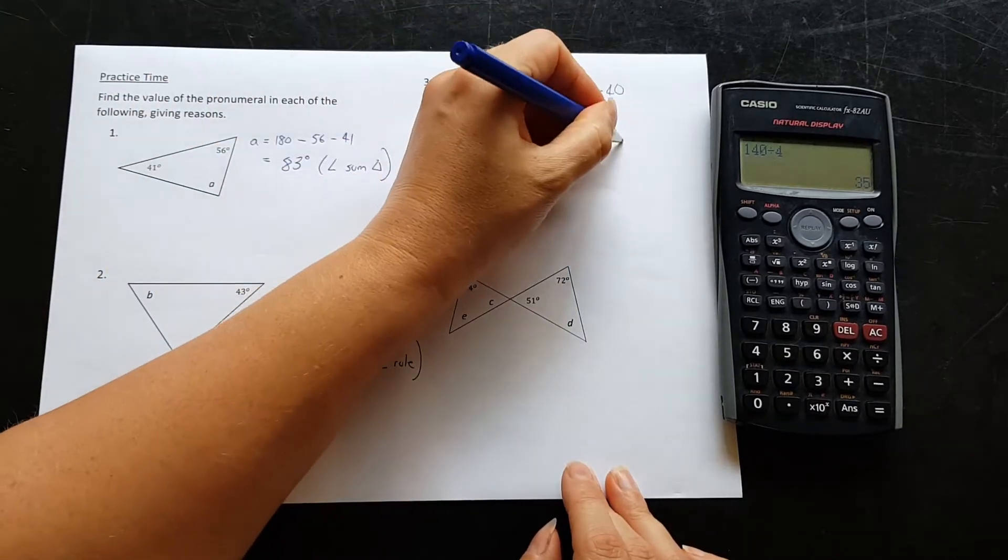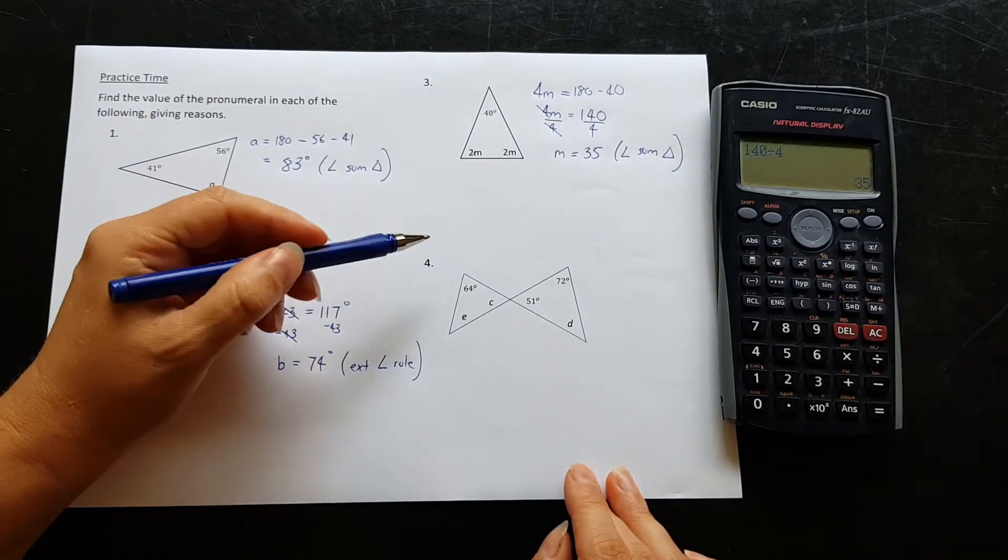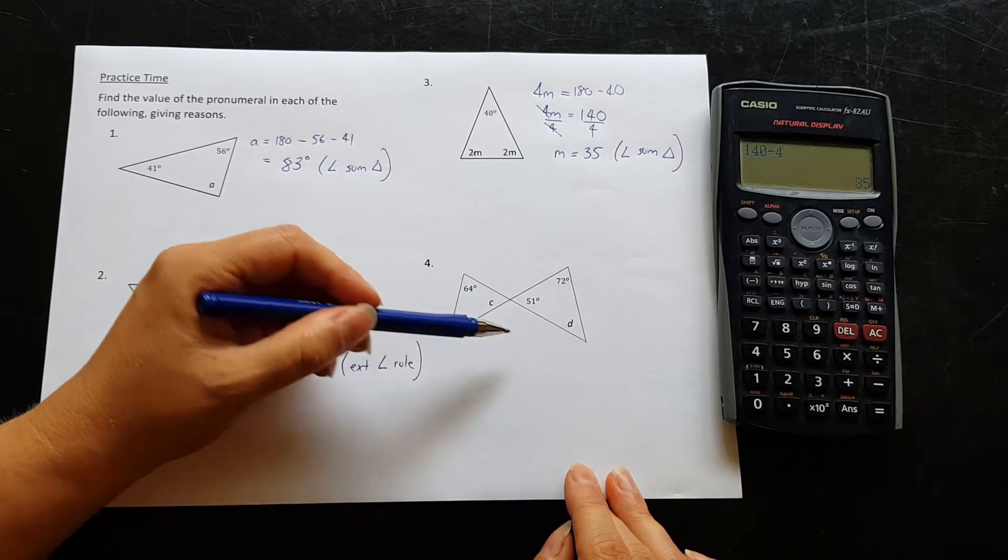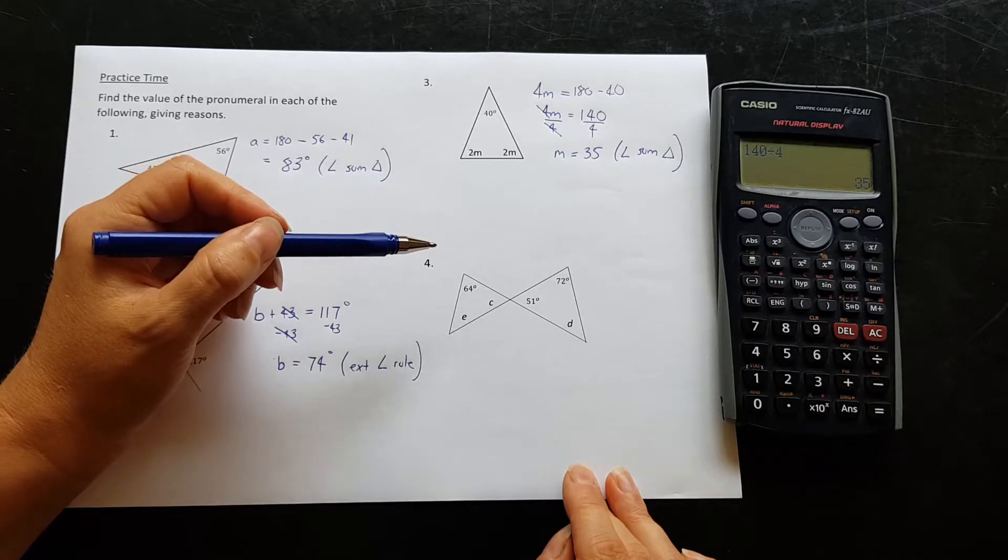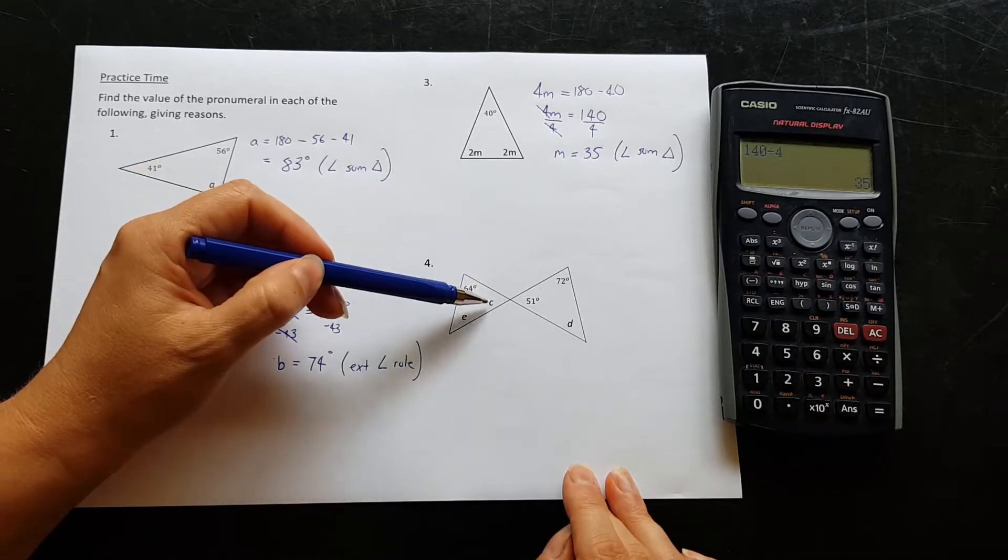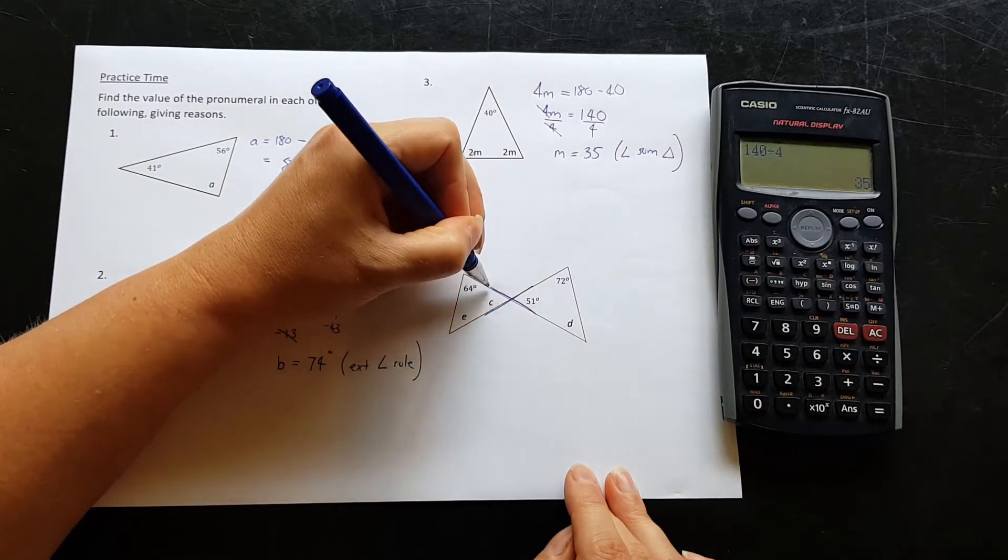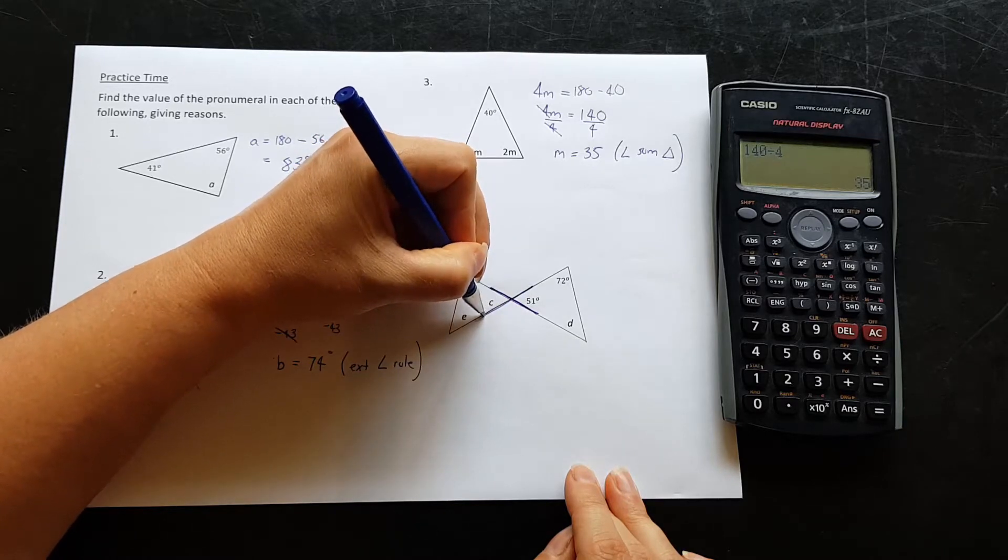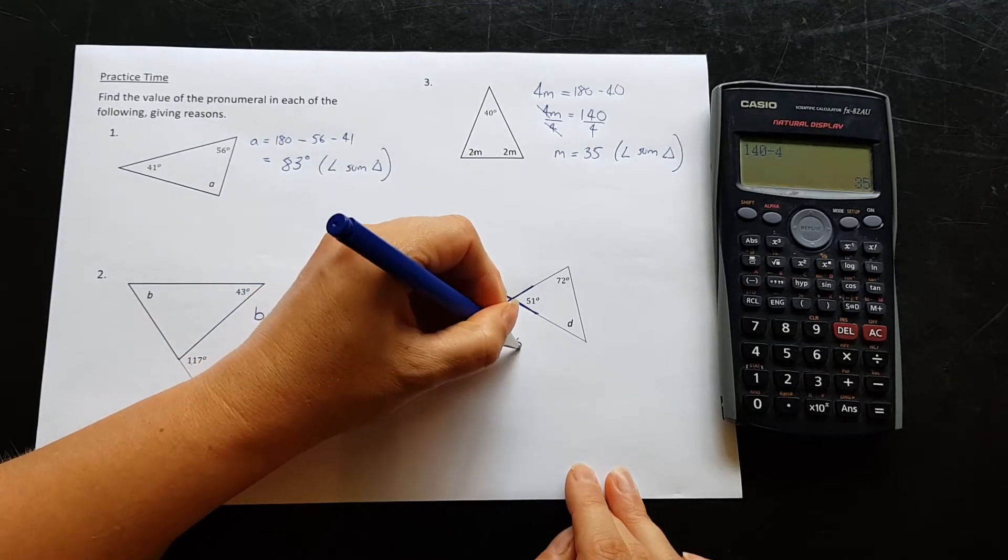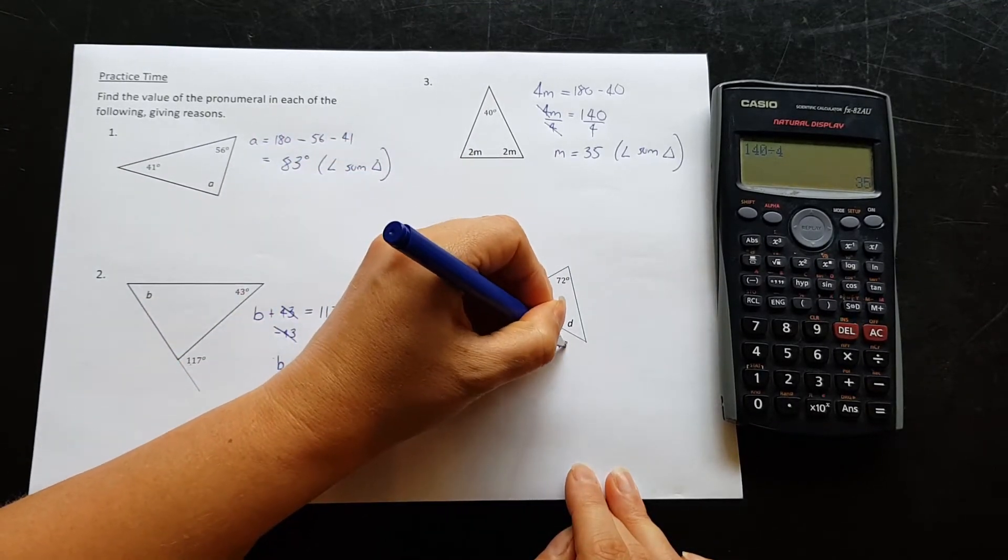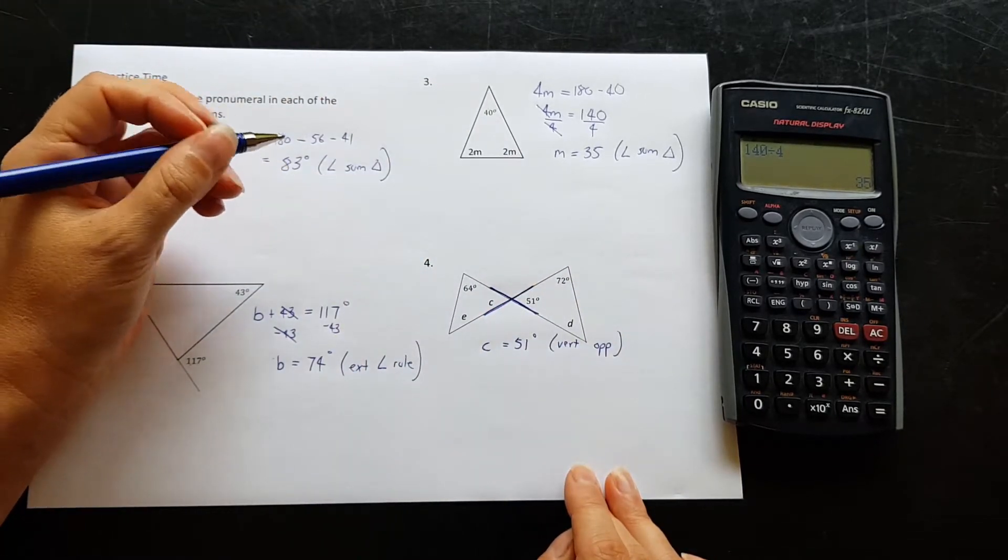And we've finally made it to the last question. Three letters here to find, and there is actually in here one of the rules from one of our previous lessons that we can use in here as well, which is to find c. To find c, we have some straight lines across here, so we know from a few lessons ago that is called vertically opposite angles. So c is going to be equal to 51 degrees because of vertically opposite angles. Okay, let's look for what else we can work out.